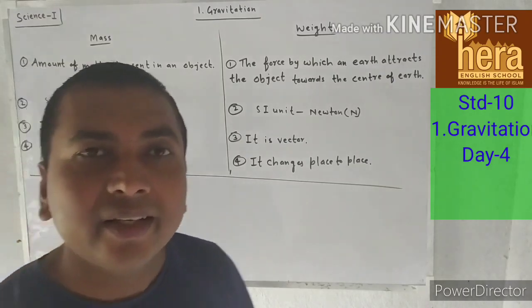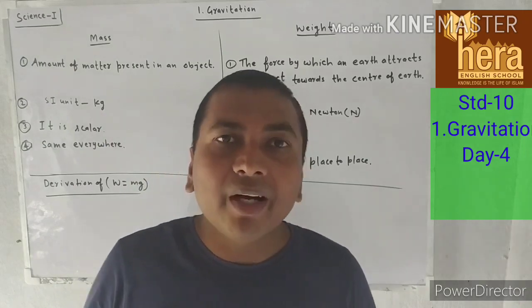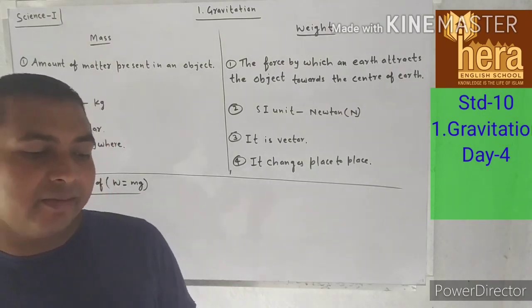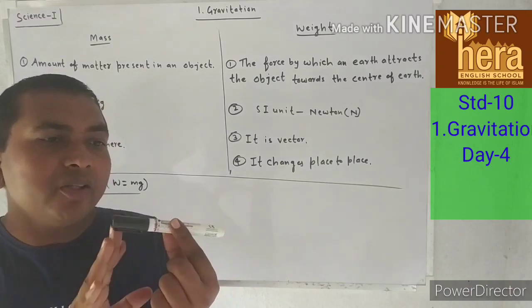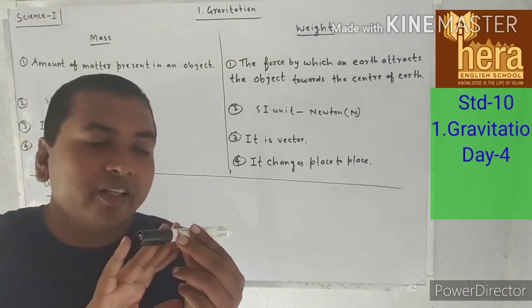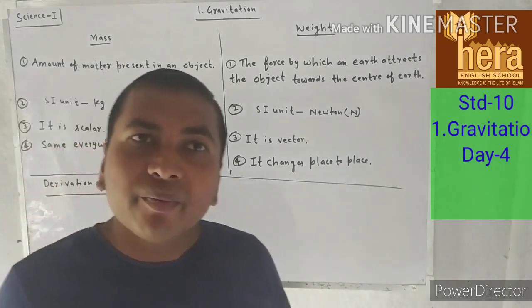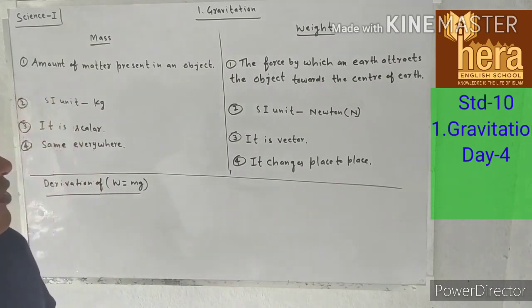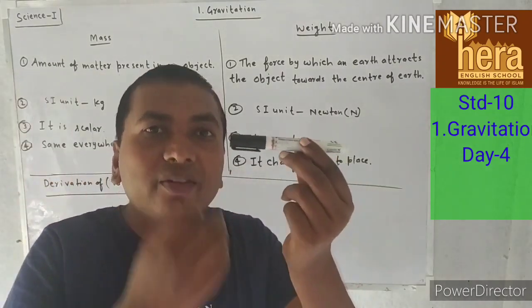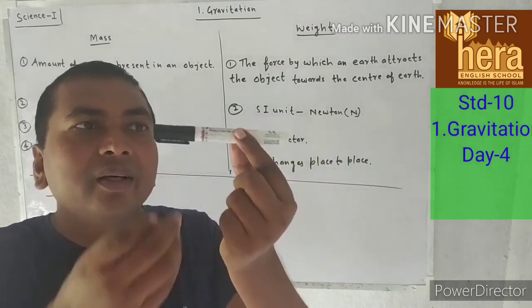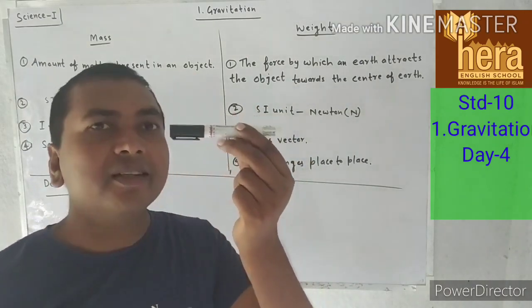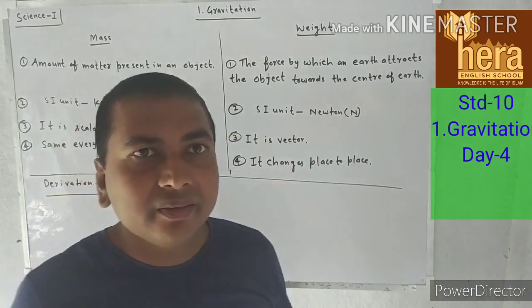So, what is mass and what is weight? Mass is the amount of matter present in any object. Say this is a marker — the amount of matter present in this marker is known as mass. But what is weight? The force by which the earth attracts the object towards the center of the earth is known as weight. Weight is a force.